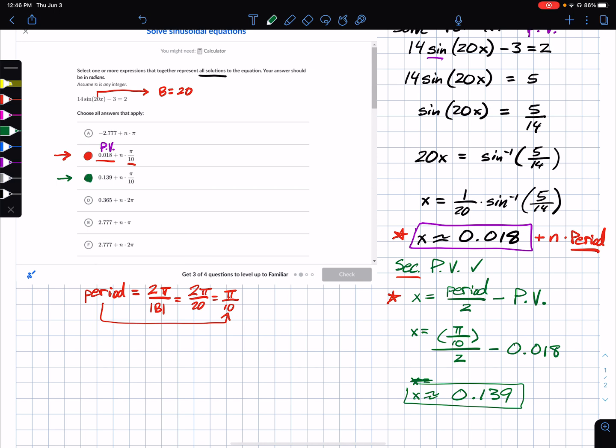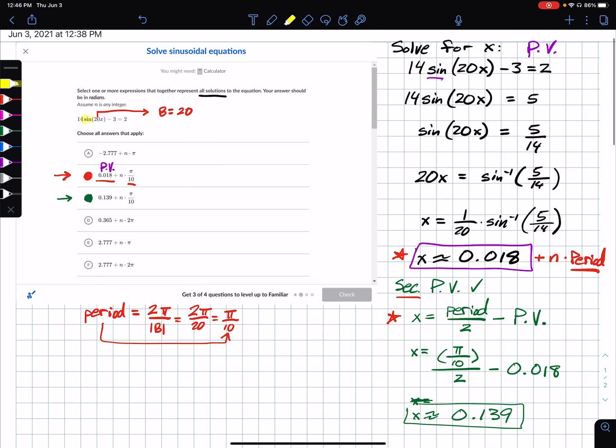Okay, so just in recap, whenever you're dealing with a sine function for one of these, find all the infinite number of solutions where we have to solve, there is another, which I've grown accustomed to calling it the secondary principal value. There's another place where this happens that the calculator doesn't tell us. The calculator is only going to give us that principal value, which is how I got the 0.018 from punching this stuff in.